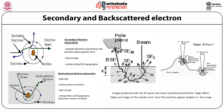Backscattered electrons are those electrons scattered backward and emitted out of the specimen — sometimes called reflected electrons. Since backscattered electrons possess higher energy than secondary electrons, information from relatively deep regions is contained in them. Backscattered electrons are sensitive to the composition of the sample: when the atomic number of constituent atoms is larger, the backscattered electron yield is larger, meaning areas with heavier atoms appear brighter in the backscattered electron image. This image is therefore suitable for observing compositional differences. Secondary electrons are generated by three different mechanisms: SE1, SE2, and SE3.